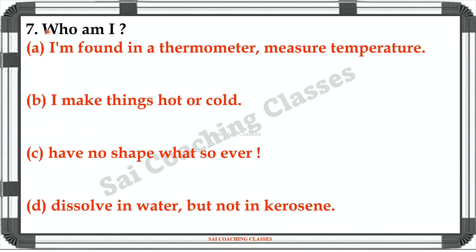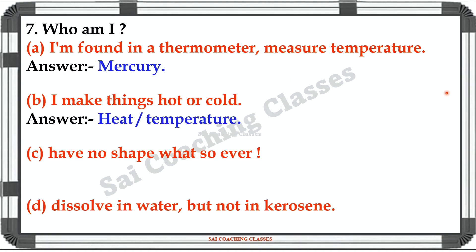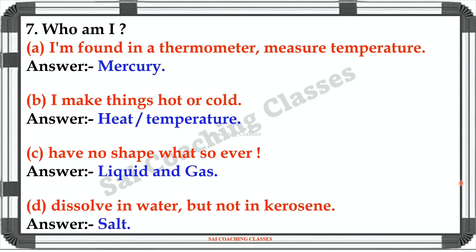Question No. 7: Who am I? A: I am found in thermometer and measure temperature. Yeh koon hai? Mercury. B: I make things hot or cold. Eisa koon hai? Heat or temperature. C: I have no shape whatsoever. Answer: Liquid and gas. D: I dissolve in water but not in kerosene. Answer: Salt.